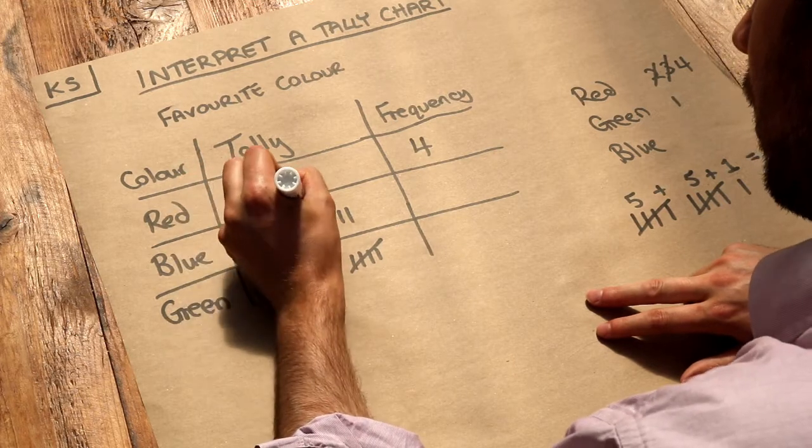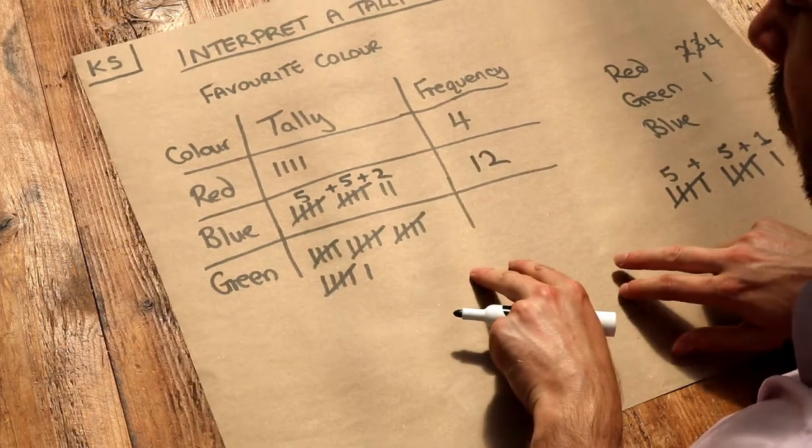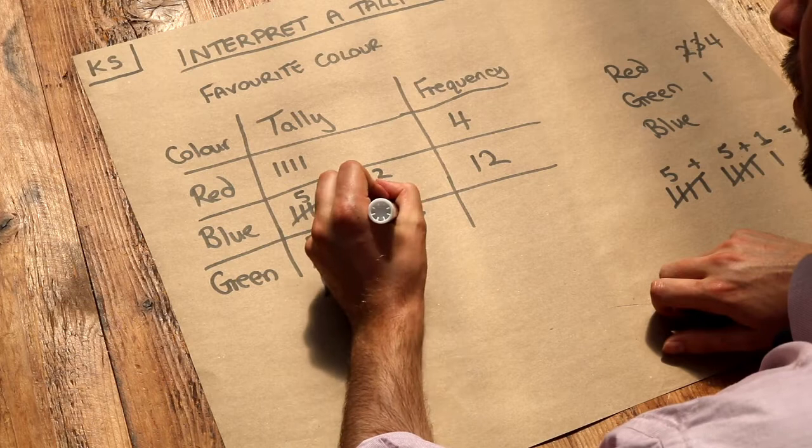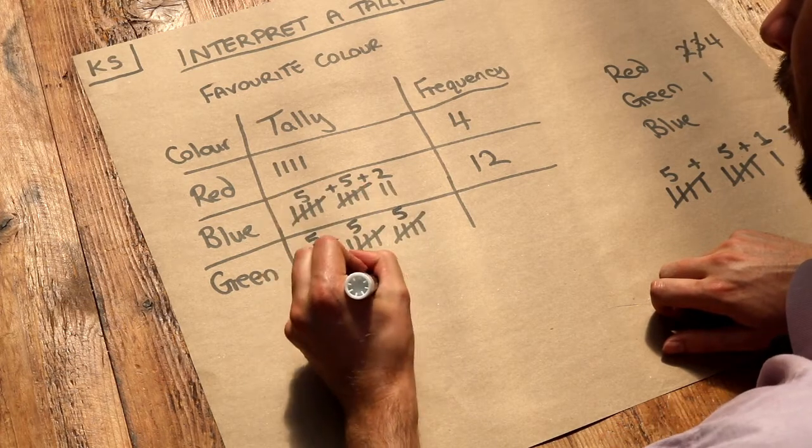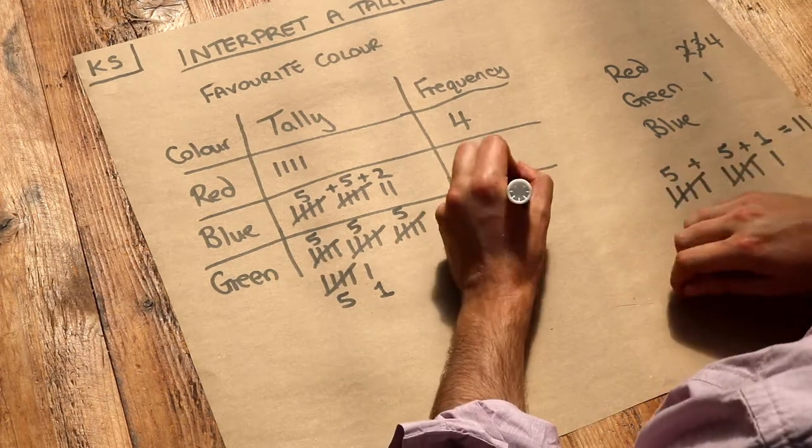Finally, green has five here, another five here, another five here, another five here, and one more. That's five, ten, fifteen, twenty, twenty-one people.